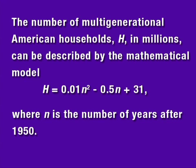The number of multi-generational American households, H in millions, can be described by the mathematical model H = 0.01n² - 0.5n + 31, where n is the number of years after 1950.